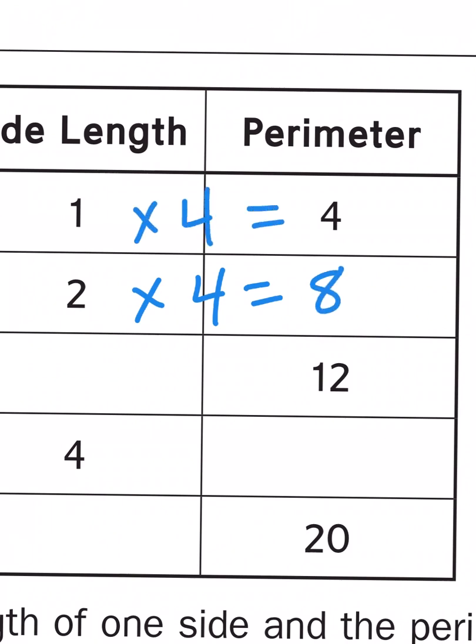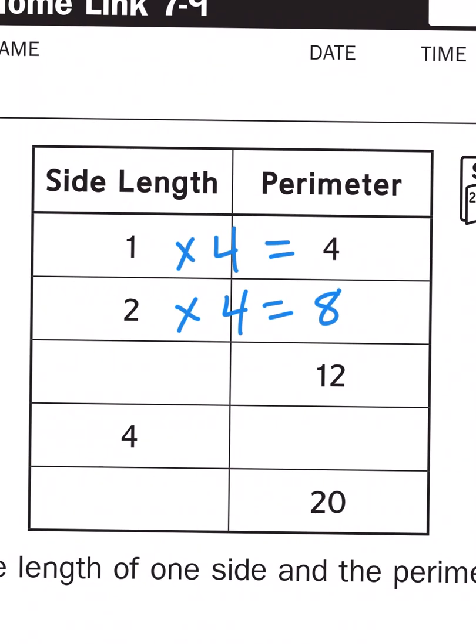When I'm dealing with the perimeter of a square, each side is going to be the same measurement. So to find the side length of a square that has a perimeter of 12, we just have to use reverse multiplication, otherwise known as division. What times four gives me 12?